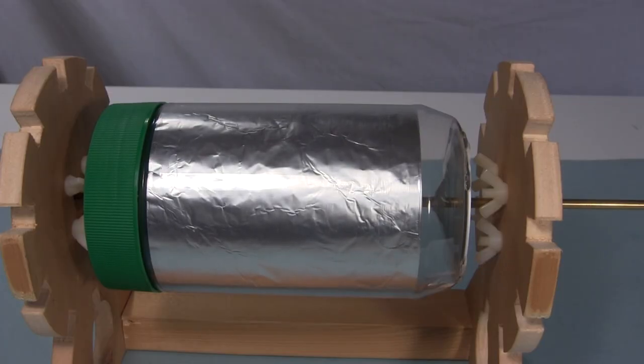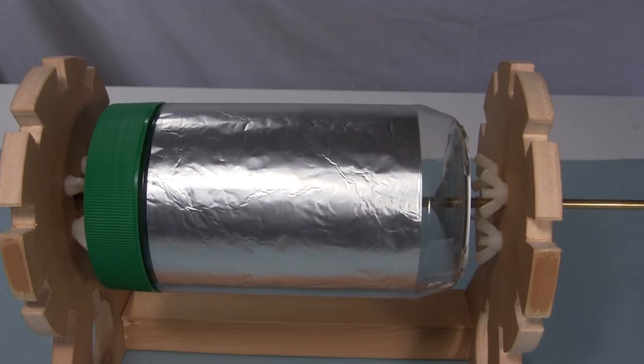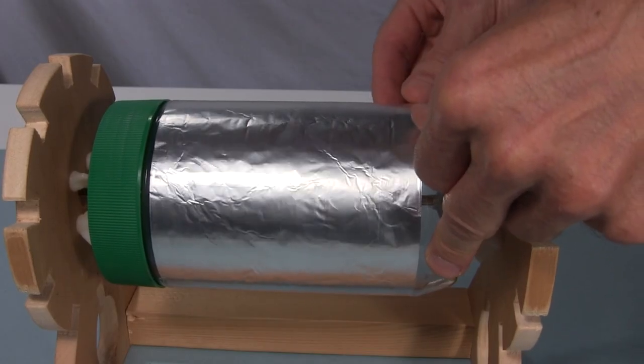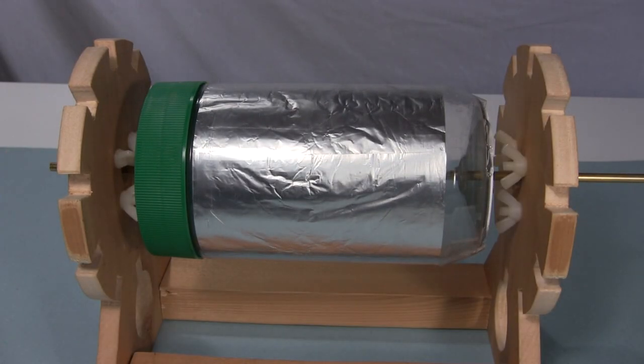After that comes the balancing. When the cylinder is turned it always stops with the same side down. By adding a little weight to the opposite side, I get it to stop only wherever it happens to be when it runs out of energy.